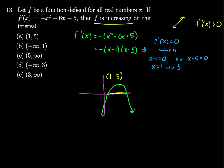And when I'm over here less than 1, or over here greater than 5, I can see that I'm below the x-axis, meaning that my derivative is negative.